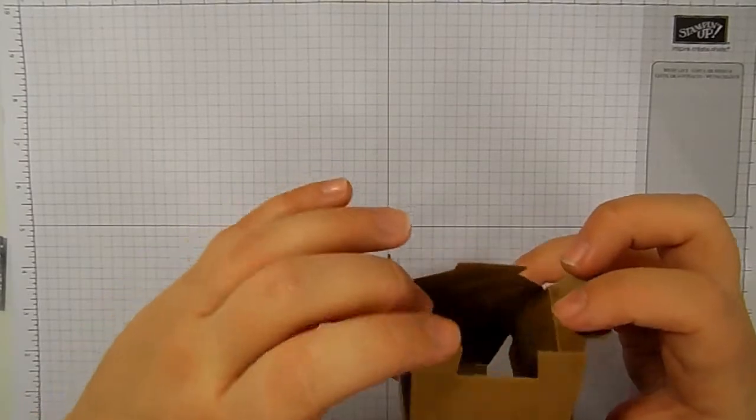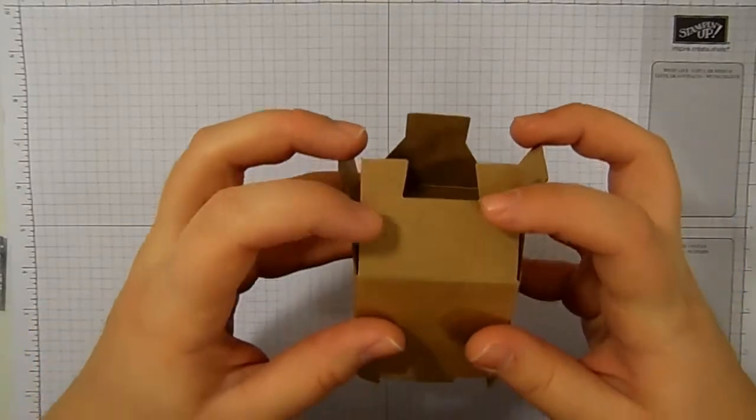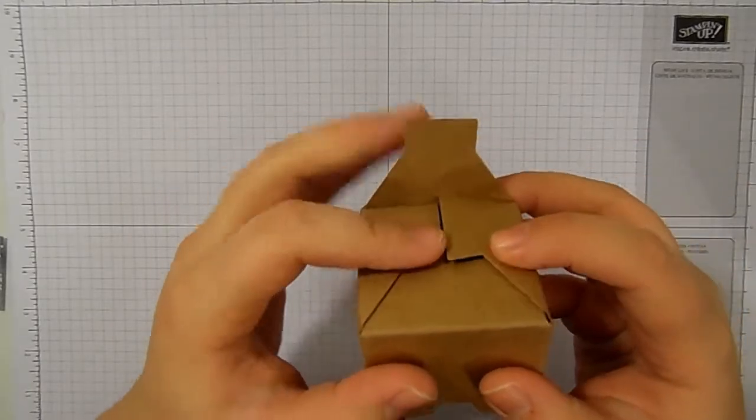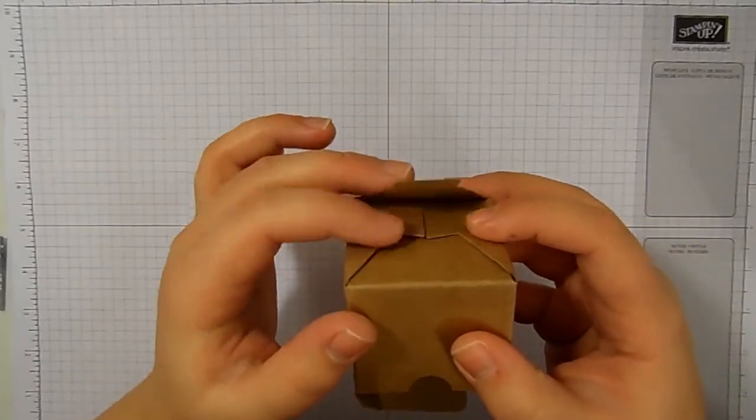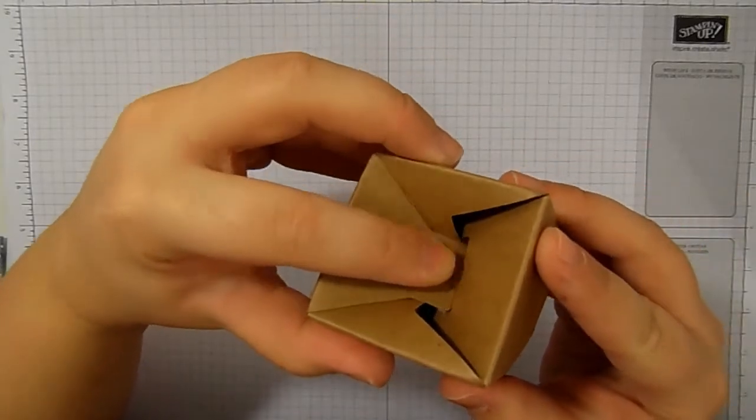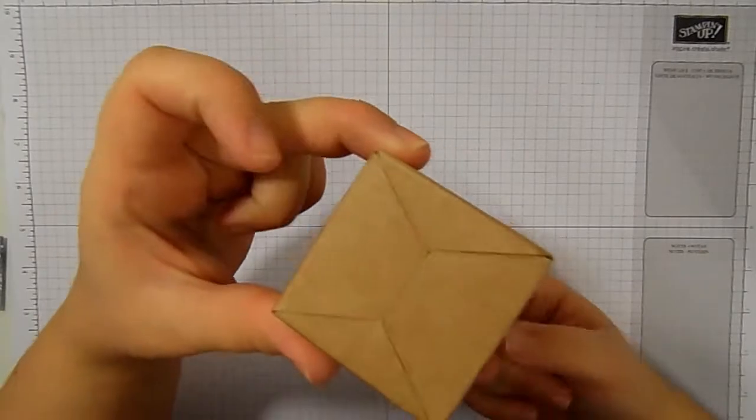And then all you have to do is you fold this piece here in first and then the two side pieces. And then this one, it's like a little arrow, you need to push straight down and it will lock into position.